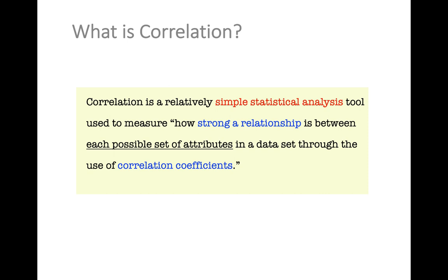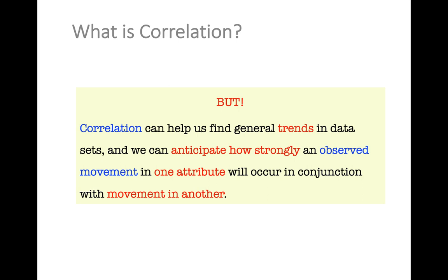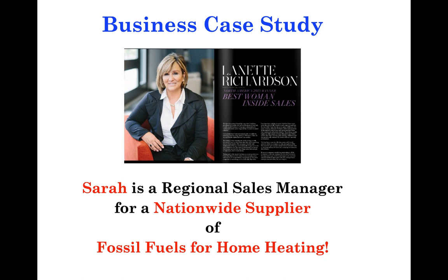Correlation is a relatively simple statistical analysis tool used to measure how strong a relationship is between each possible set of attributes in a dataset. Through the use of correlation coefficients, we do not infer causation, nor do we use correlation coefficients to predict one attribute's value based on another's. However, correlation can help us find general trends in datasets and anticipate how strongly an observed movement in one attribute will occur in conjunction with movement in another.